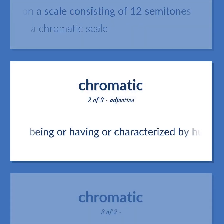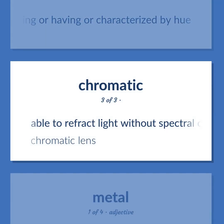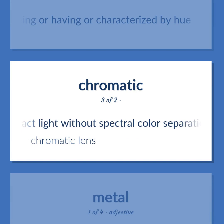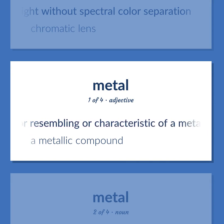Being or having or characterized by hue. Able to refract light without spectral color separation — chromatic lens. Containing or made of or resembling or characteristic of a metal. A metallic compound.